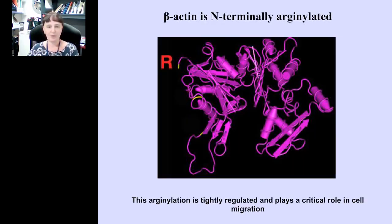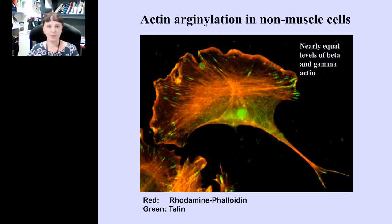In muscle cells, many key structural components of the myofibrils are arginylated — another example of actin cytoskeleton structure. Overall, our conclusion is that the actin cytoskeleton may be extensively regulated by arginylation. One of the first substrates we identified was non-muscle beta-actin. We found that non-muscle beta-actin is N-terminally arginylated, at a terminal region unique to this isoform compared to all other actin isoforms. Over the course of this work, we found that arginylation of beta-actin is tightly regulated and plays a critical role in cell migration.